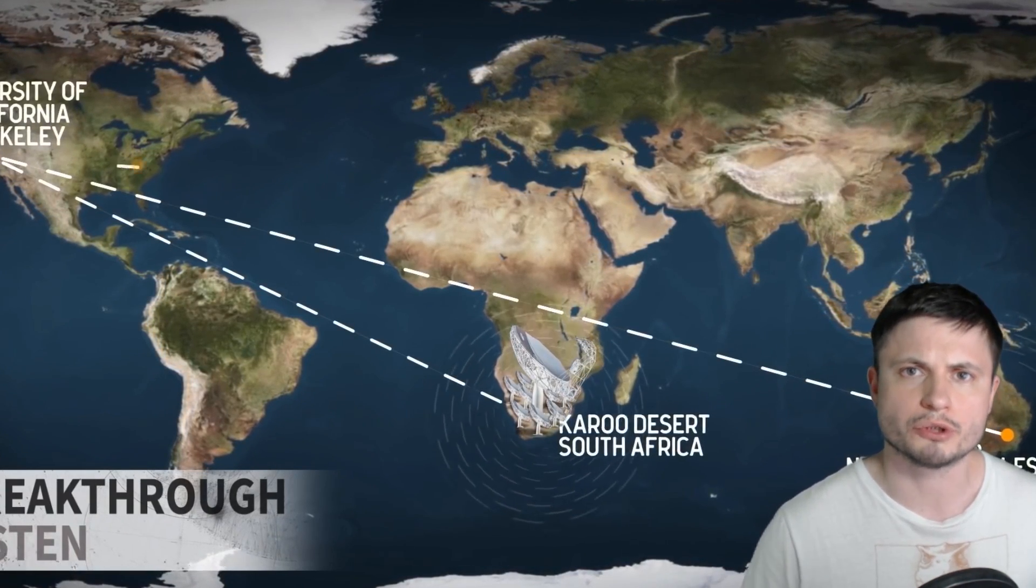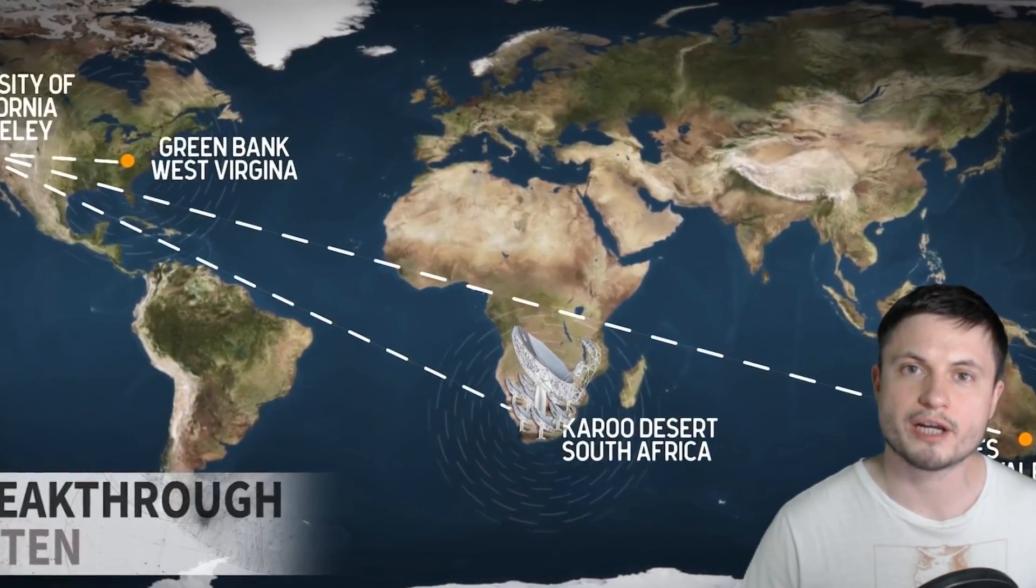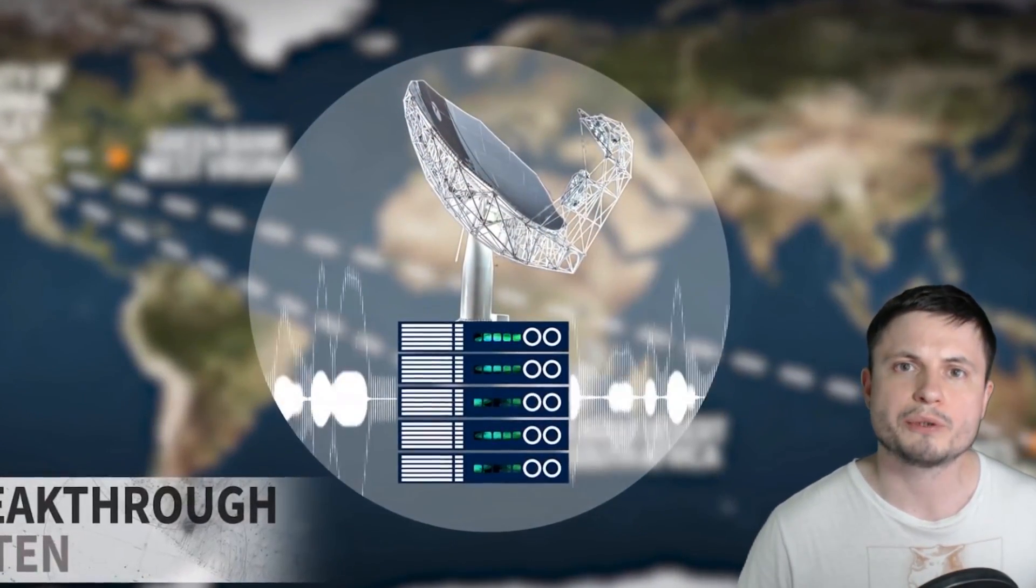Now, this is kind of what we use here on Earth as well. These are very common frequencies for satellites, for example. Also, as you probably know, your Wi-Fi works at 2.4 to 5 gigahertz range. So all of these frequencies are technically what we would call Schelling points as well.